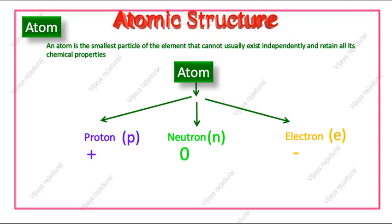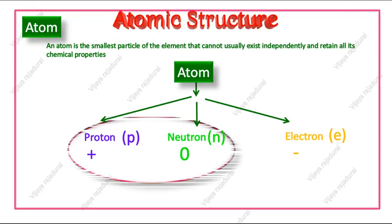So the protons and neutrons cannot move in an atom. They will be present at the core of an atom which is called a nucleus. Nucleus is made up of proton and neutron. Where will the electron be available?